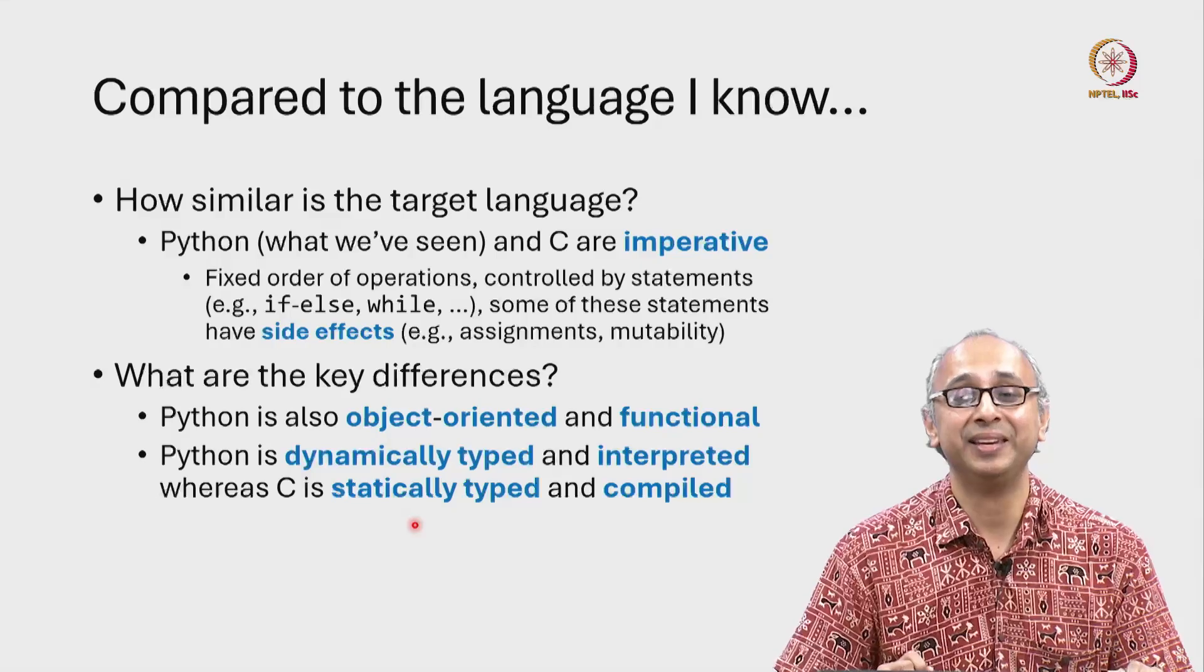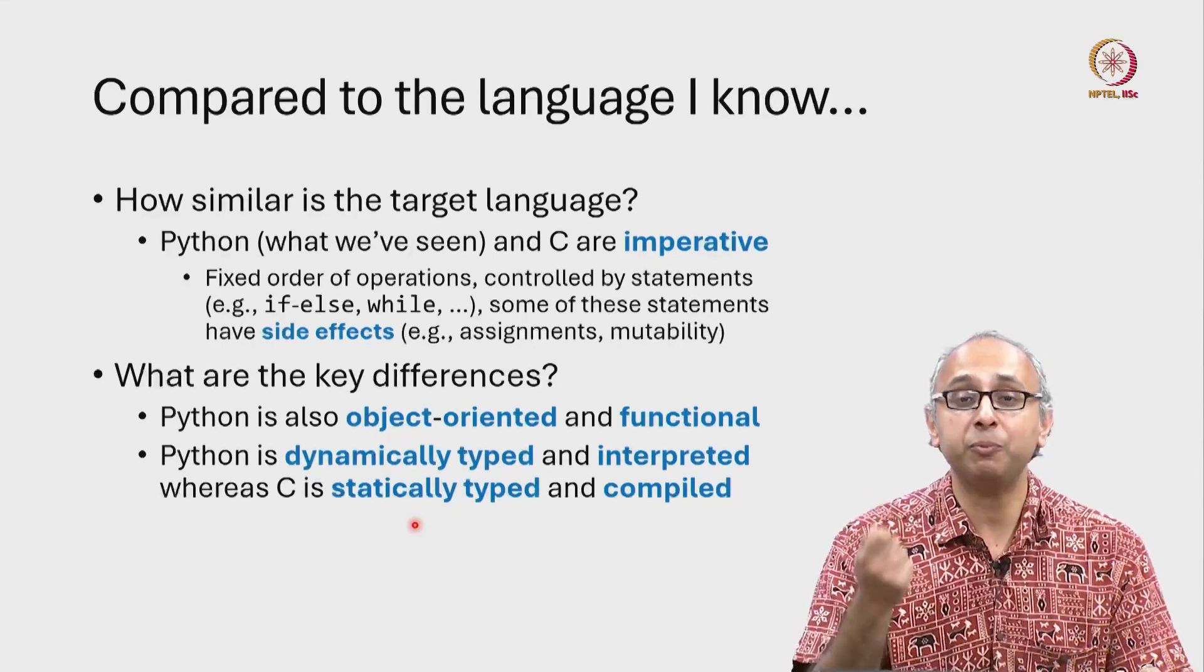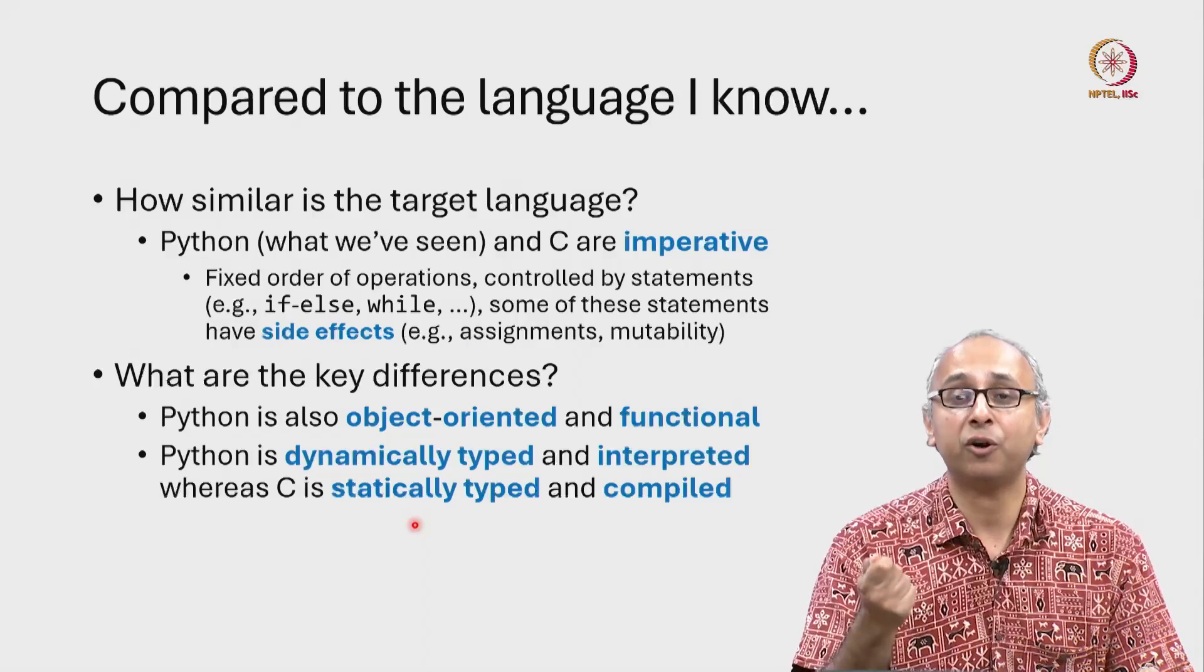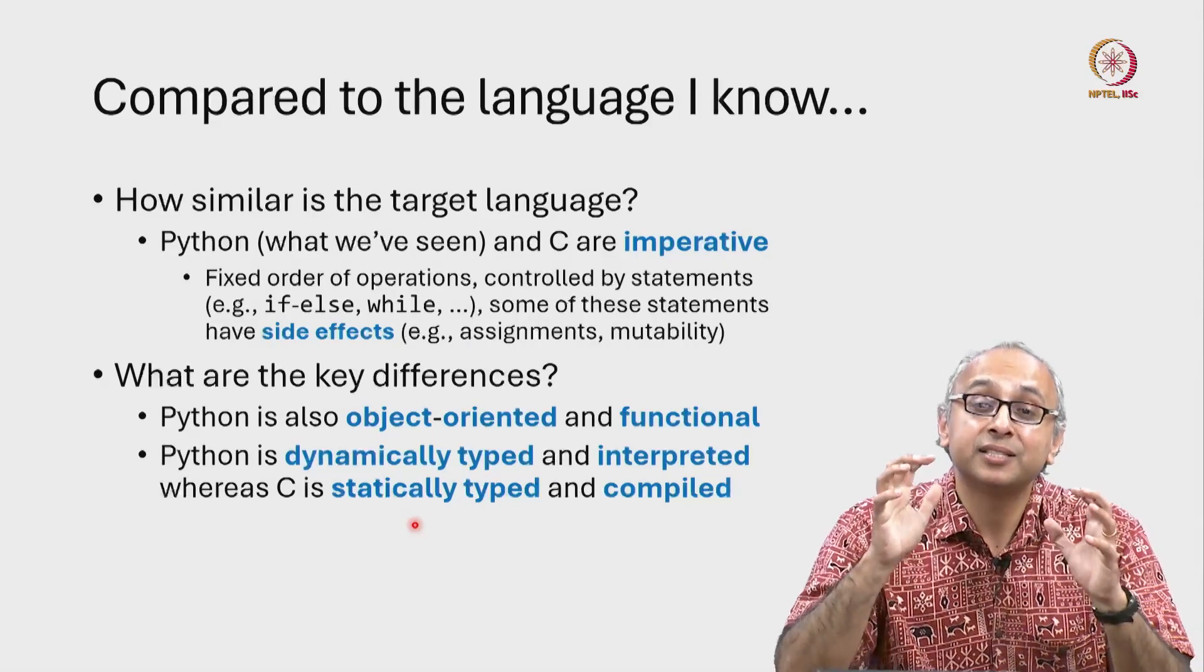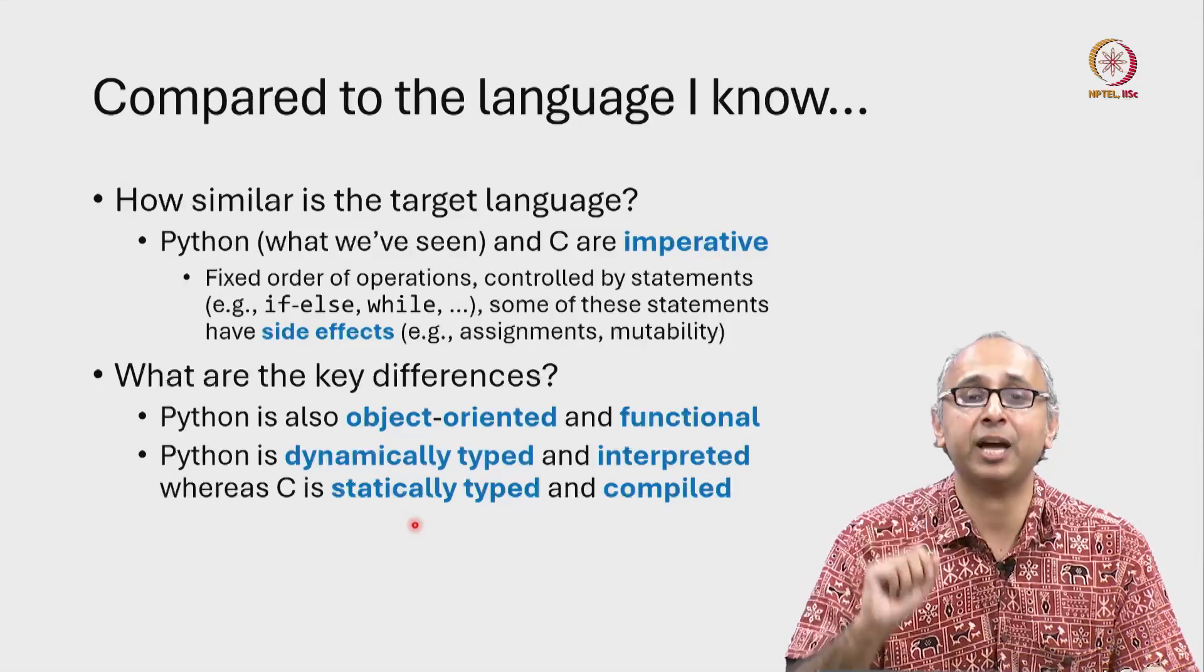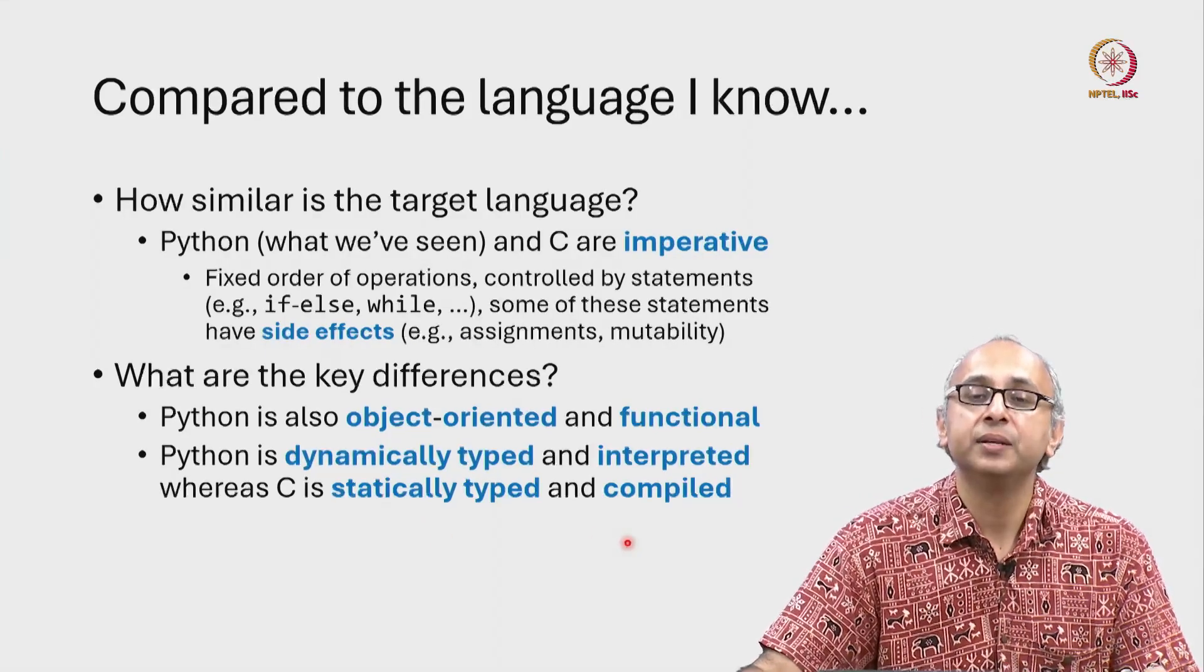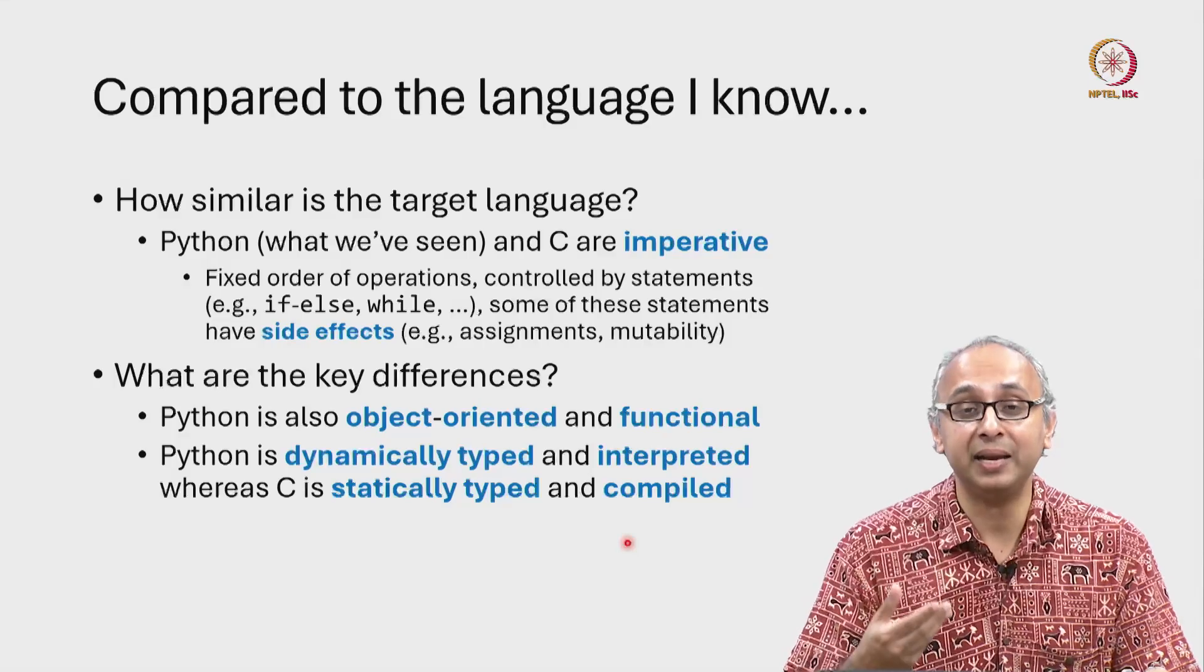We cannot do this in C. C is statically typed, which means that when we say we have a variable X of type int, it is fixed to be of type int, at least for that portion of the code. Further, as we shall see, C is a compiled language.